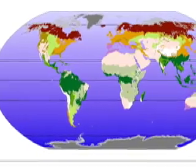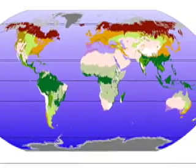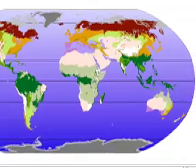The world is divided by many types of land formed by plant life and climate. They are called biomes.